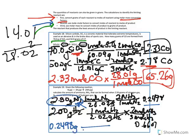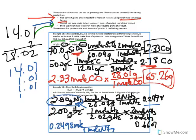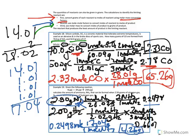We need to convert 0.2498 moles of NH3 to grams. One mole of NH3 weighs how many grams? One nitrogen is 14.01, and we have three hydrogens each at 1.01, giving 17.04 grams per mole. So 0.2498 times 17.04 tells us that the maximum number of grams we could make is 4.26 grams of ammonia.